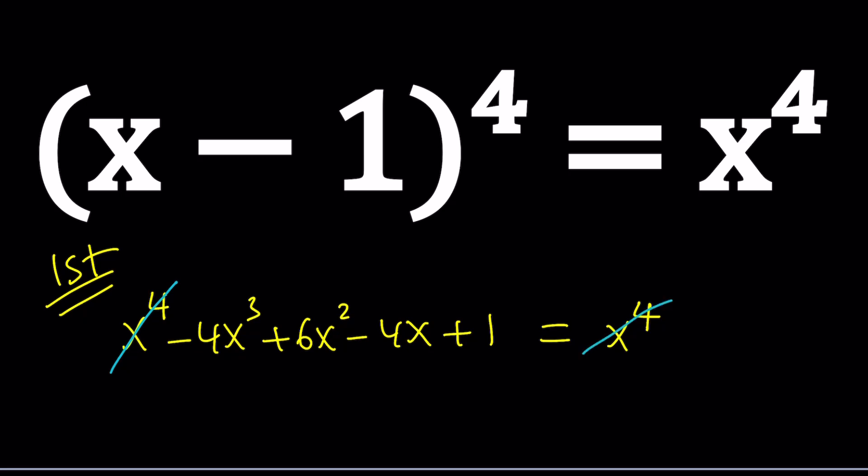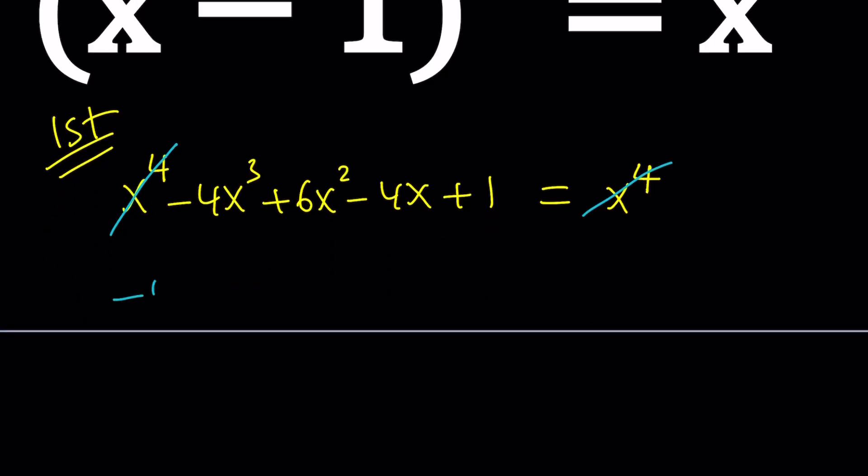Notice that the leading coefficient is negative. Let's rewrite this: -4x^3 + 6x^2 - 4x + 1 = 0. Now we have a cubic equation, but we're going to make it a little easier to solve.